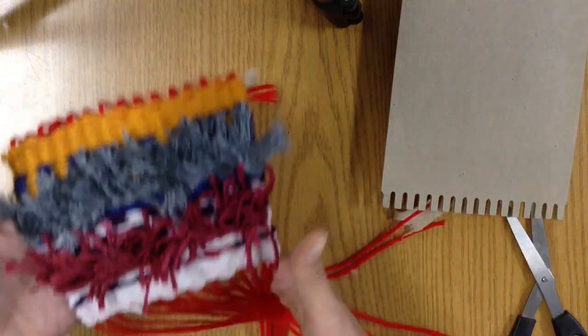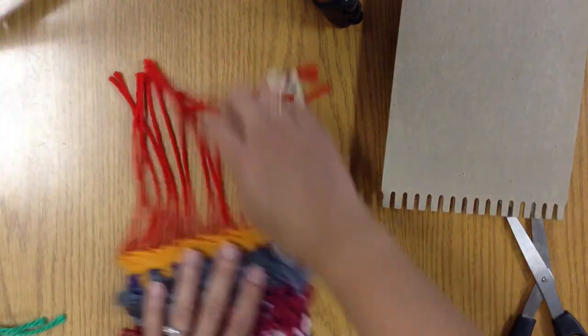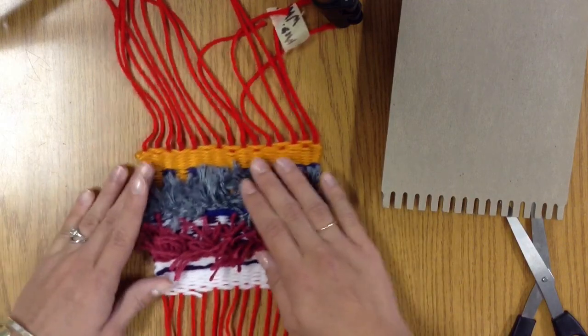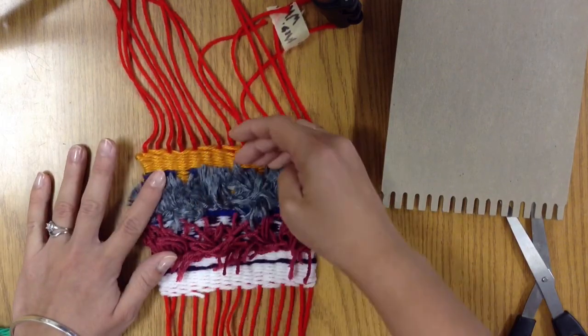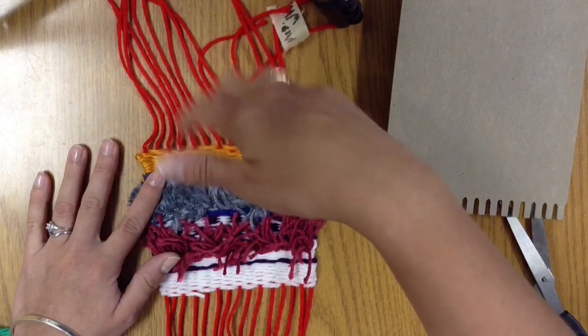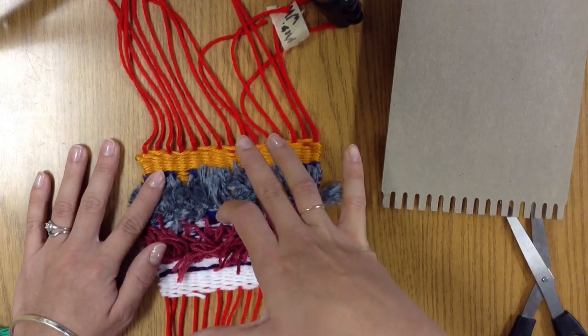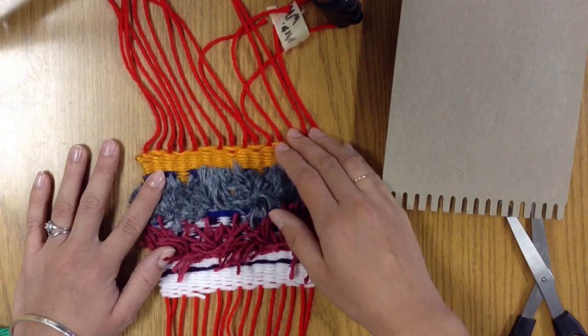So I can turn this over now and you can see all those strings and my actual weaving. Don't move this around or play with it too much because these can still come undone. Just like you beat them together they can come loose as you're playing with it. So we want to get right to tying those knots we discussed.